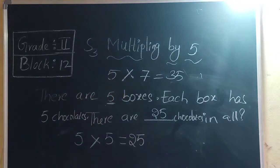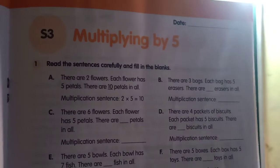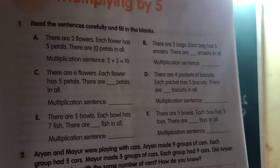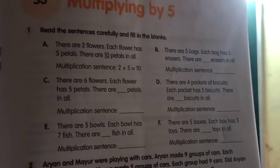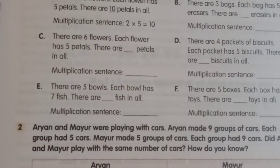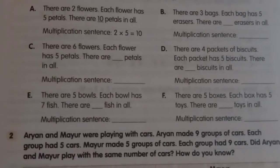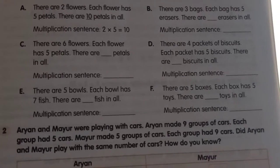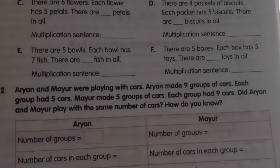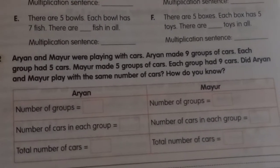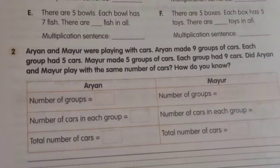Everyone open your workbooks. Have you opened S3 — multiplying by 5? There are some story sums. Write the total number and write the multiplication sentence for them. Read each story sum carefully, understand it, write the multiplication sentence, and write the answer. Next problem: Aryan and Mayur were playing with coins. Aryan made 9 groups of coins, each group had 5 coins. Mayur made 5 groups of coins, each group had 9 coins.